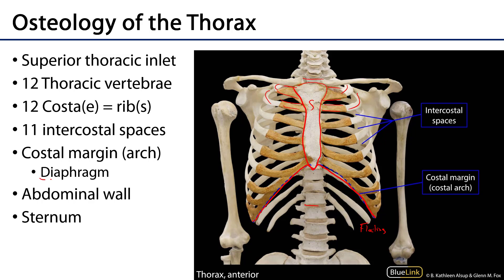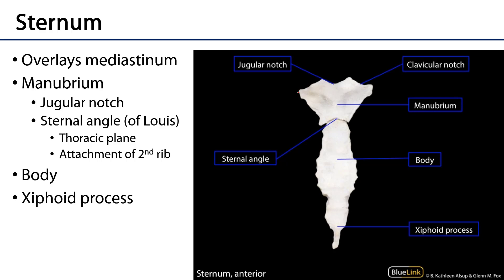This is the inferior most osteological feature of the anterolateral rib cage, and it's along this margin anterolaterally that the diaphragm is going to connect. That diaphragm is a muscular division between the thoracic cavity superiorly and the abdominal pelvic cavity inferiorly. Now let's take a closer look at the sternum. The sternum is going to overlay the mediastinum, which is going to be a central feature of the thoracic cavity, and there are important viscera in the mediastinum such as the heart.